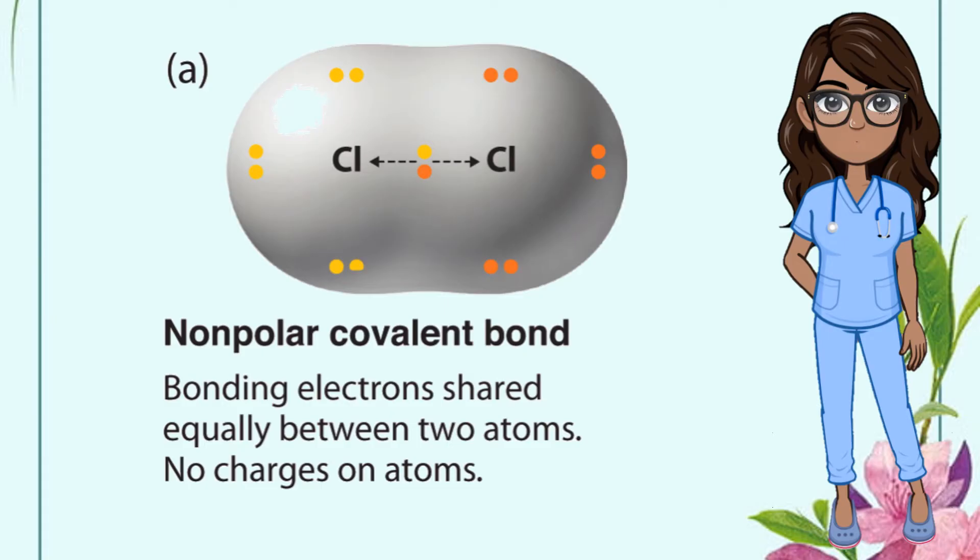On the other hand, a non-polar covalent bond develops if both atoms equally share a pair of electrons between them. This occurs when the bonding atoms have approximately equal EN value or equal ability to attract electrons to each other. Non-polar covalent bond is an example of bond formed when two chlorine atoms combine.